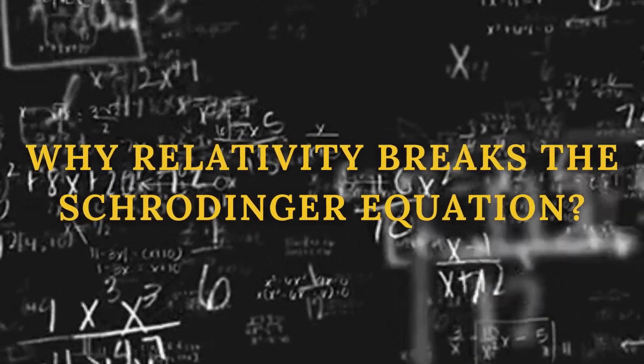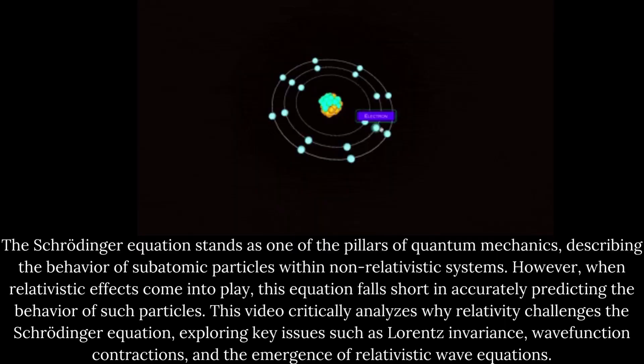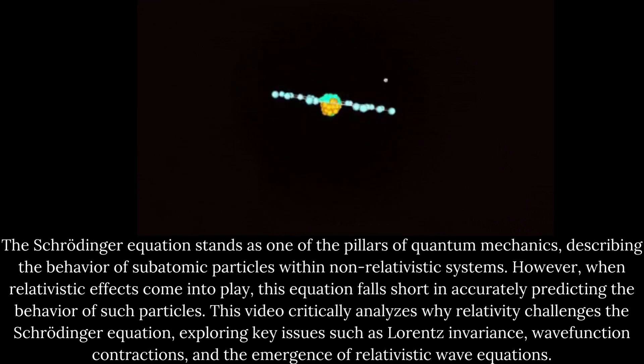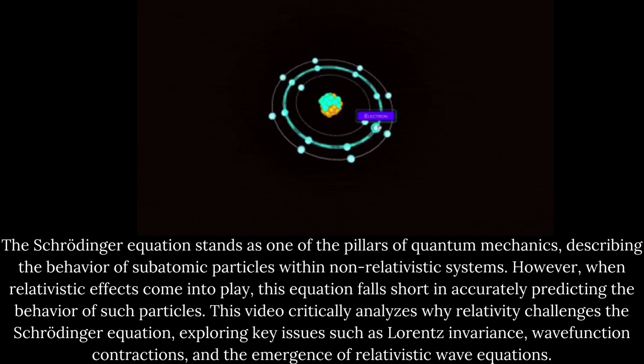Why Relativity Breaks the Schrodinger Equation. The Schrodinger equation stands as one of the pillars of quantum mechanics, describing the behavior of subatomic particles within non-relativistic systems. However, when relativistic effects come into play, this equation falls short in accurately predicting the behavior of such particles.